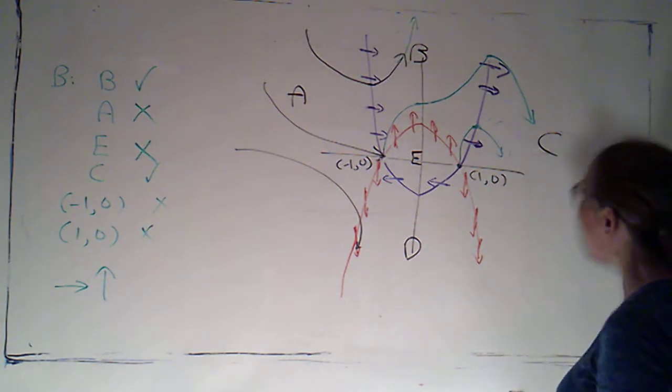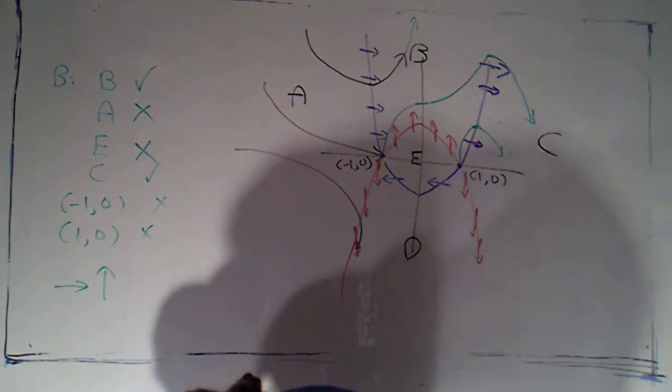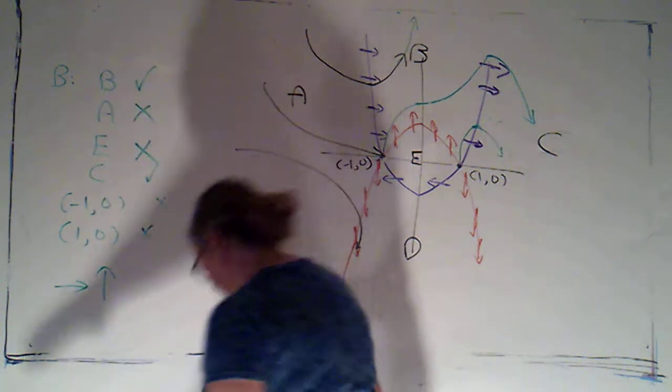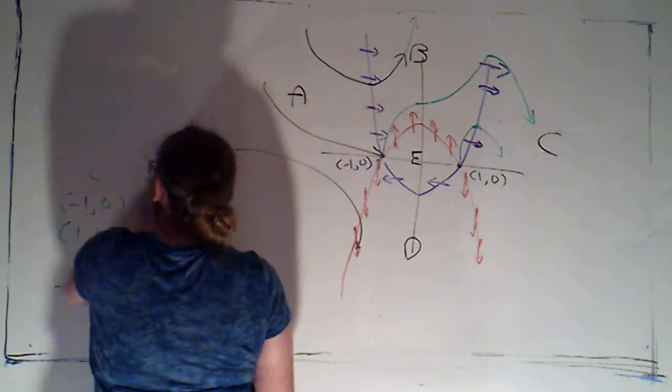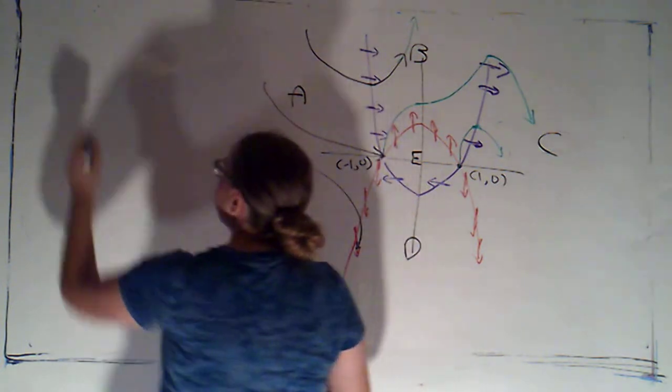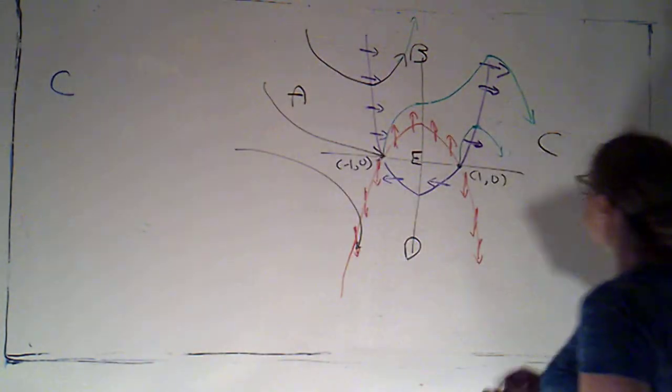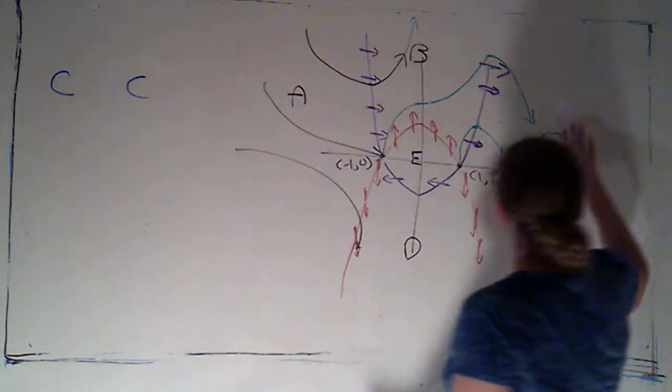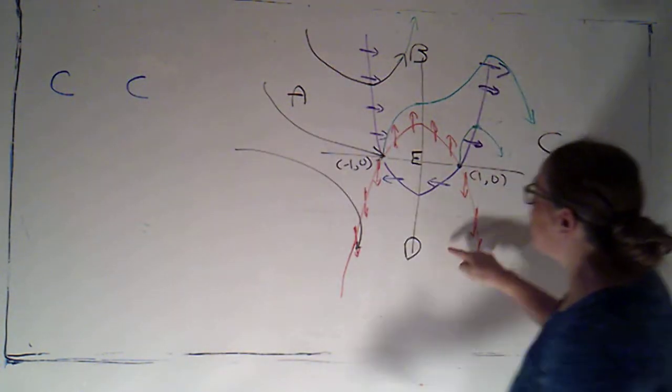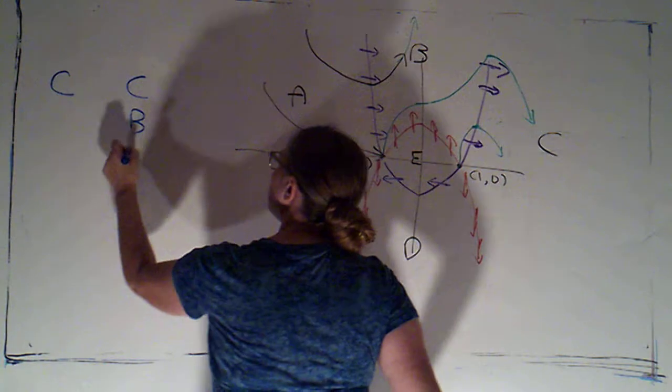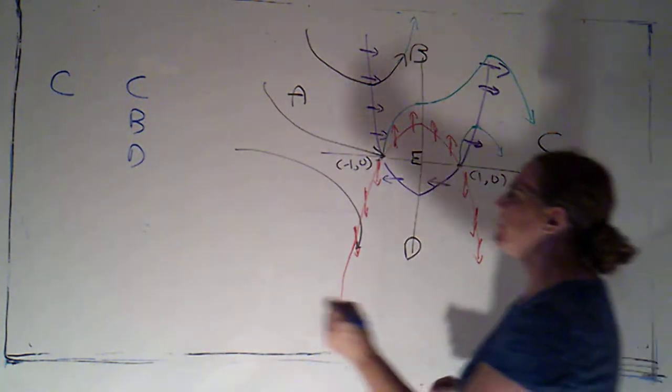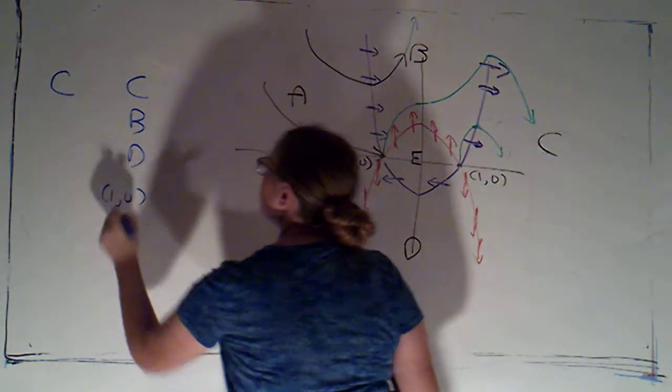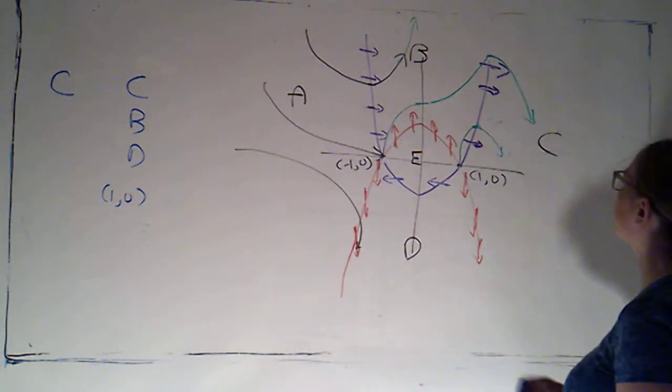So, let's take a look now at region C. So, if we're in C, that's an infinite, unbounded region, so maybe I could stay in C. The adjacent regions would be B and D, so I want to see if I could go into either of those. And the equilibrium point 1, 0 is on the boundary of C.